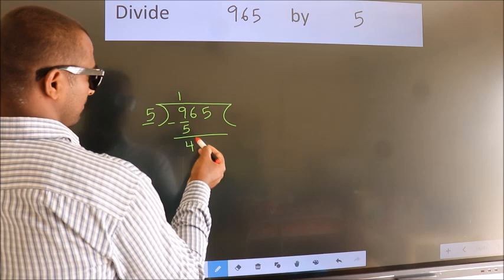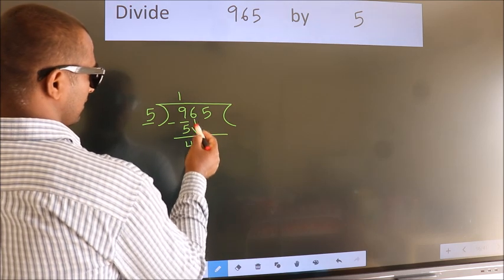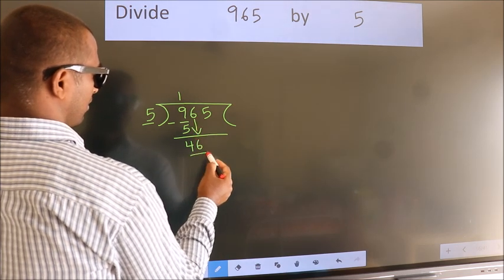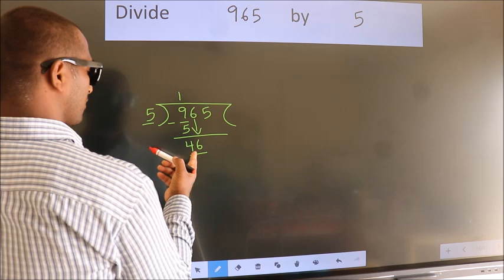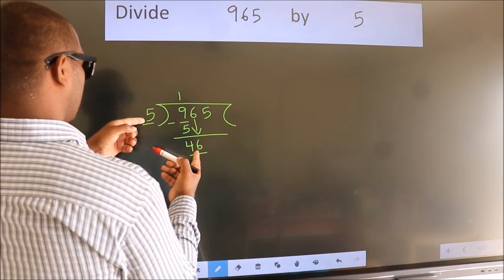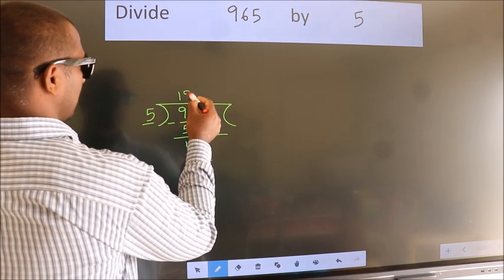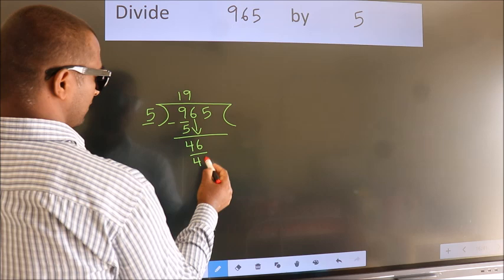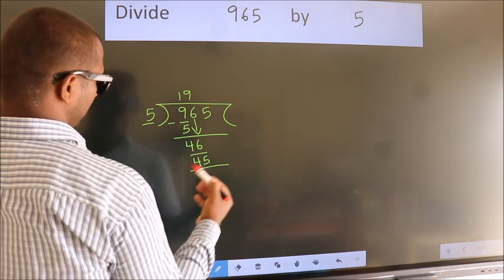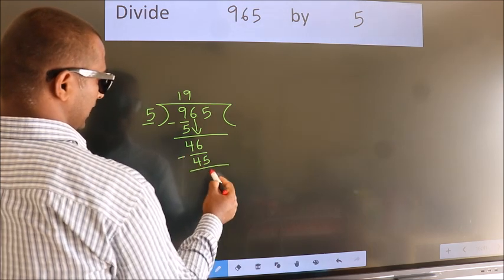After this, bring down the beside number. So 6 down, so 46. A number close to 46 in 5 table is 5 9s 45. Now we subtract. We get 1.